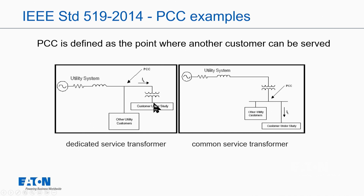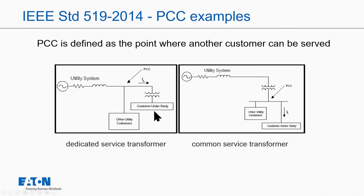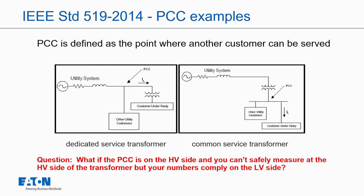If you measure voltage distortion on the secondary and it's okay, then you can be assured that on the primary it's going to be okay, because we're pushing harmonic currents from the load toward the source. The current on both sides of the transformer would be the same from a THD standpoint, minus the third harmonics that could circulate in the delta winding, or if it's a delta zigzag, could come back to the load. If the PCC is on the high side and you can't safely measure there, but your numbers comply on the low voltage side, then you can be assured it's going to be okay.